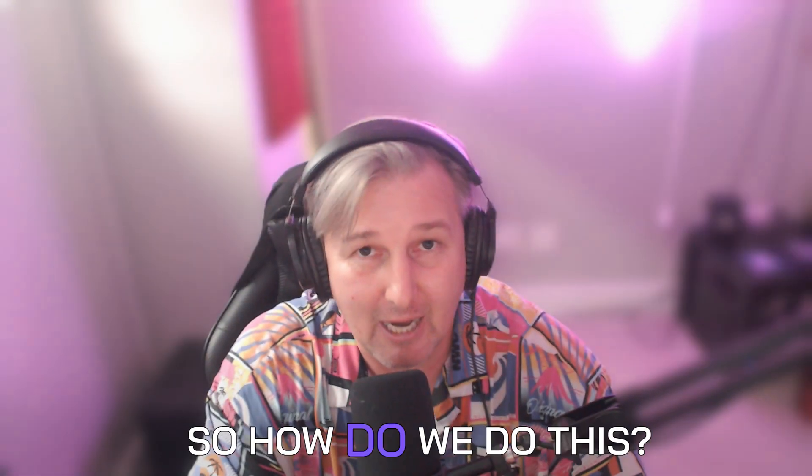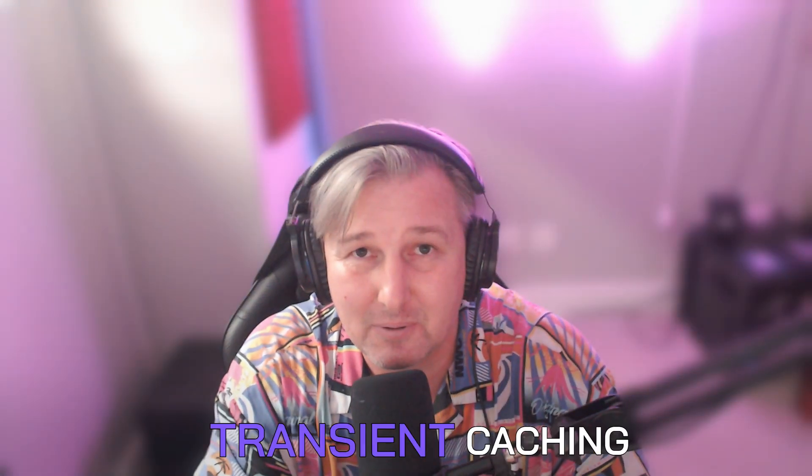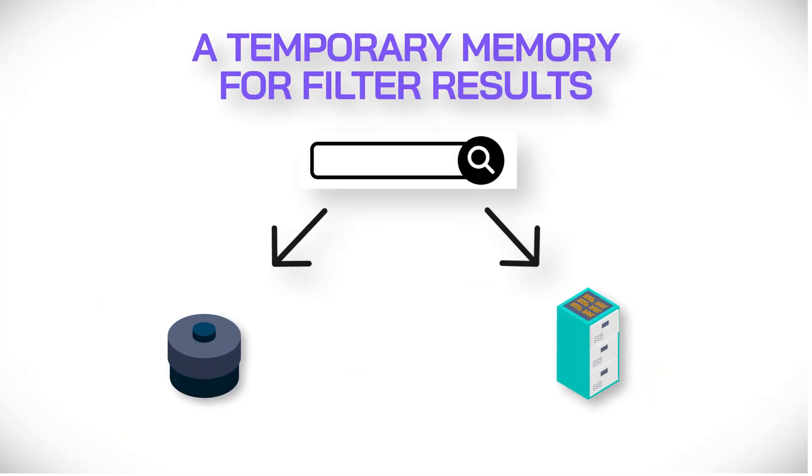So how do we do this? That's through transient caching. Now you might be asking yourself, what the heck is transient caching? Think of transient caching as a temporary memory for your filters or database queries on your WordPress site. Instead of constantly going back and grabbing stuff from the database, it will actually cache queries that other users might have had that match yours.